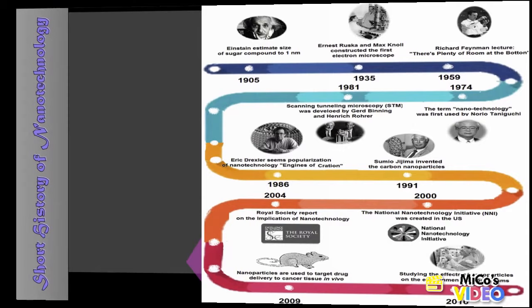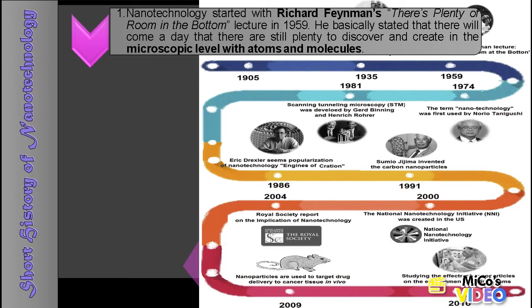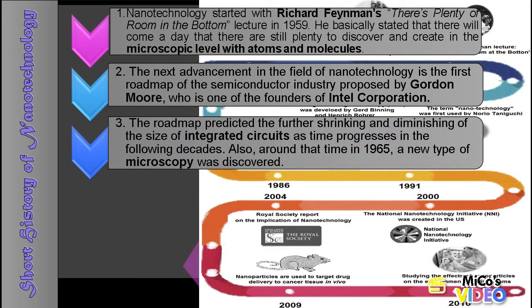Now let us trace back the history of nanotechnology. Nanotechnology started with Richard Feynman's "There is Plenty of Room at the Bottom" lecture in 1959, where he basically stated that there will come a day when there is still plenty to discover and create at the microscopic level with atoms and molecules. The next advancement was the first roadmap of the semiconductor industry proposed by Gordon Moore, one of the founders of Intel Corporation, which predicted the further shrinking of the size of integrated circuits over the following decades.